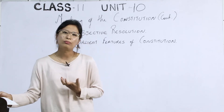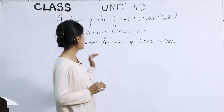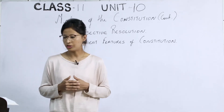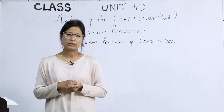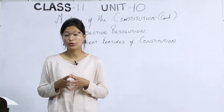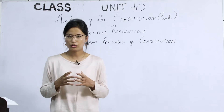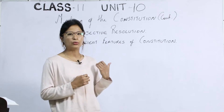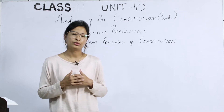The remaining topics are two: the Objective Resolution and the salient features of the constitution. The Objective Resolution — in 1946, a resolution was passed by Jawaharlal Nehru in the constituent assembly, and this resolution came to be known as the Objective Resolution.